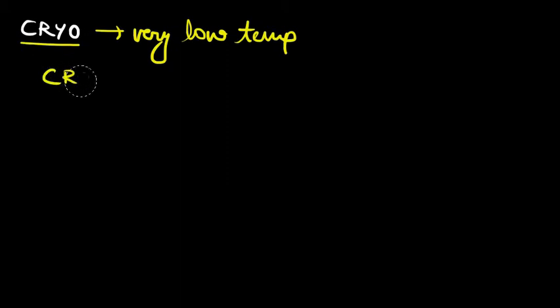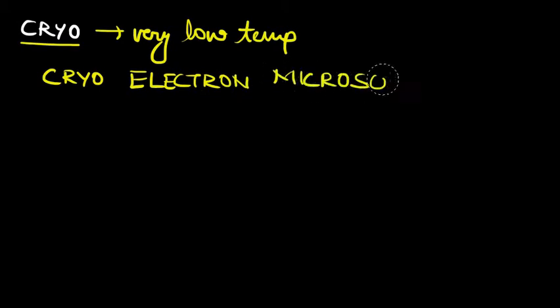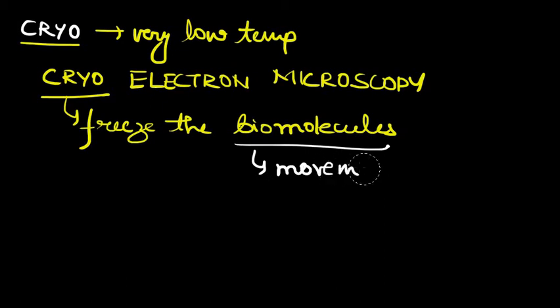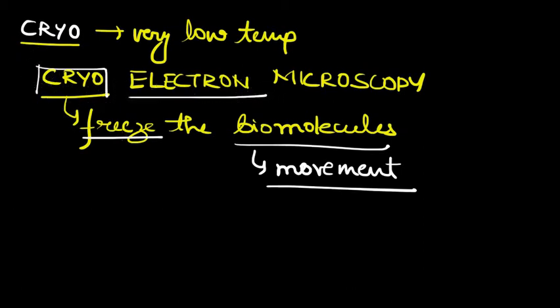So the total now is cryo-electron microscopy. This helps to freeze the biomolecules. Why is there a requirement of freezing the biomolecules? The requirement is because biomolecules are in constant movement and hence a particular static study is not possible. Hence when we freeze them, we can have new images which can be used for further research. So this cryo-electron microscopy is a particular kind of electron microscopy where freezing is required for the biomolecules in order to get high resolution biomolecule pictures.